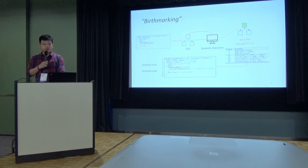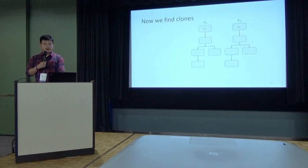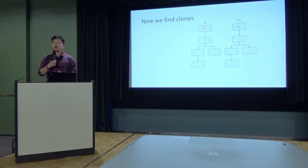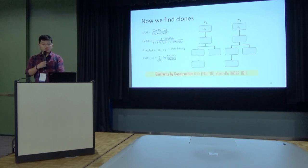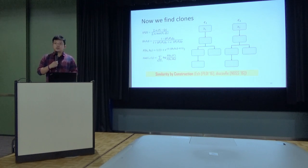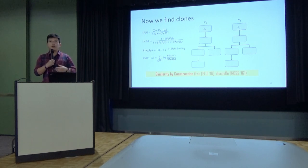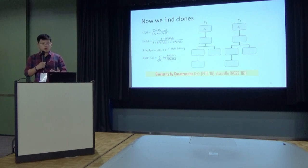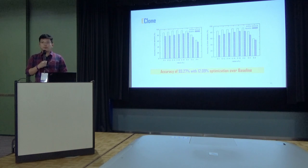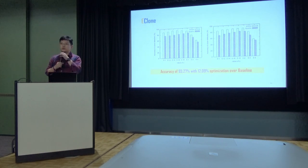We can do this at a contract level or a function level. Given a pair of contract graph marks, we first compute their numerical vector distance, and then adopt the similarity-by-construction idea to calculate the probability that these two contracts or functions are semantic clones of each other. We have also developed the eClone tool to implement this idea.